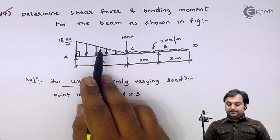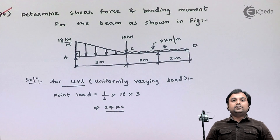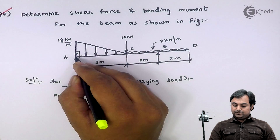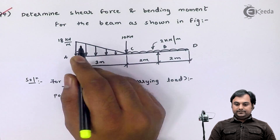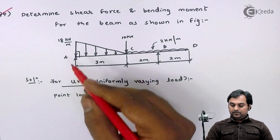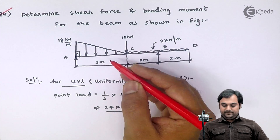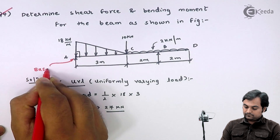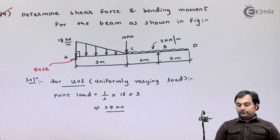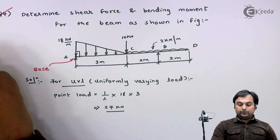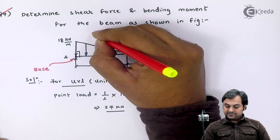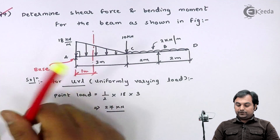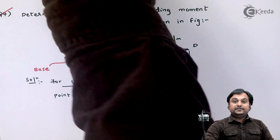This means I can replace the UVL with a 27 kilonewton point load. This load will act at one-third of the base distance from the base. Since the two right-angle sides meet at the base point, the 27 kilonewton load acts at one meter from point A.